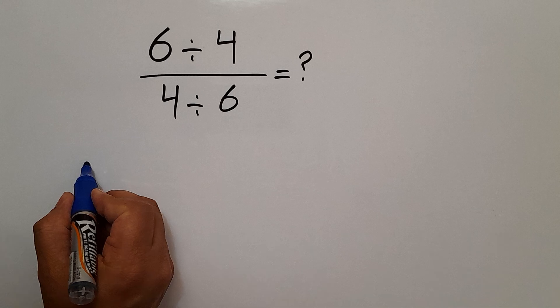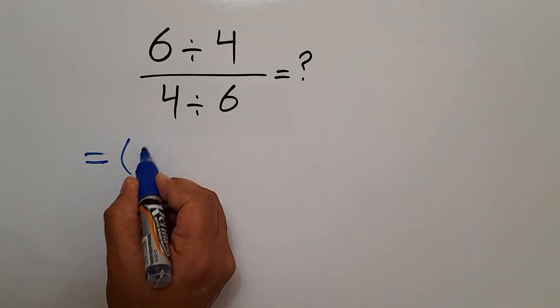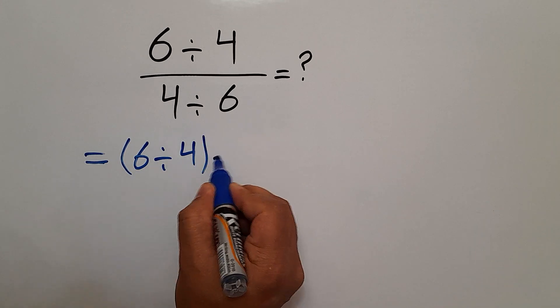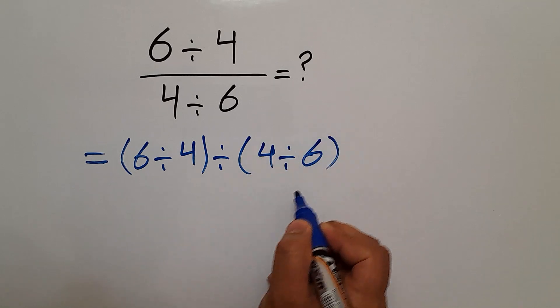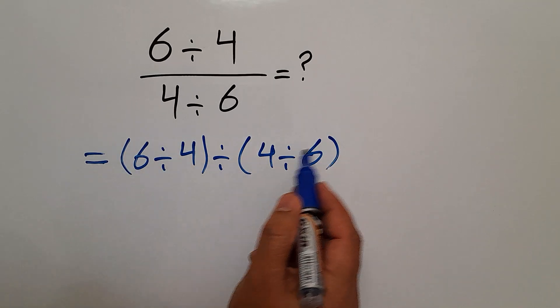Our fraction can be written as parentheses 6 divided by 4, divided by parentheses 4 divided by 6. The numerator divided by the denominator.